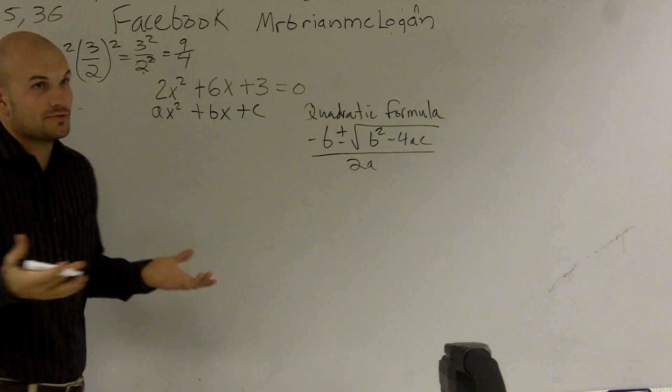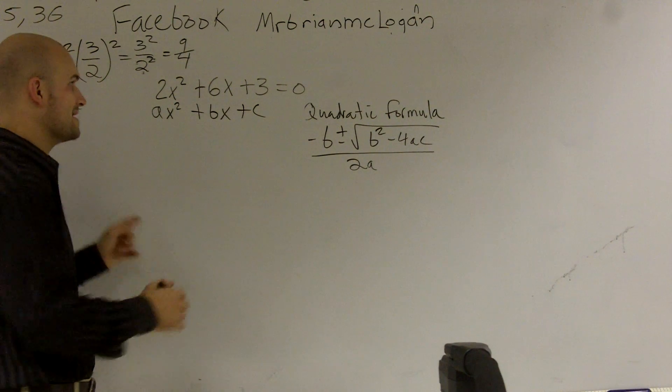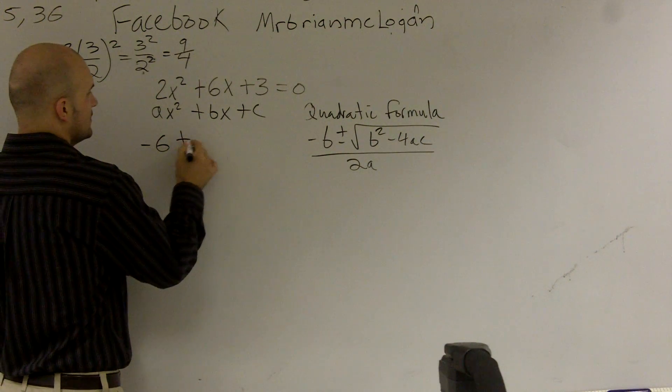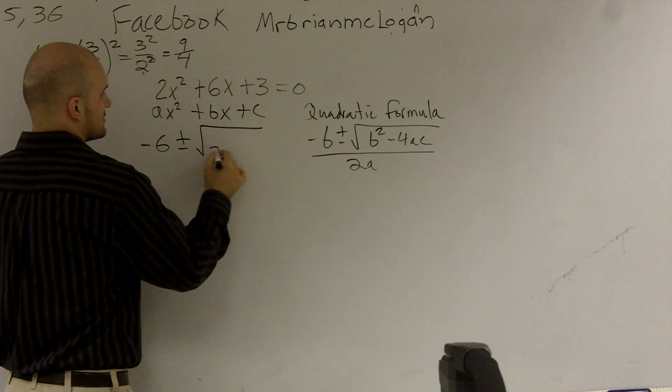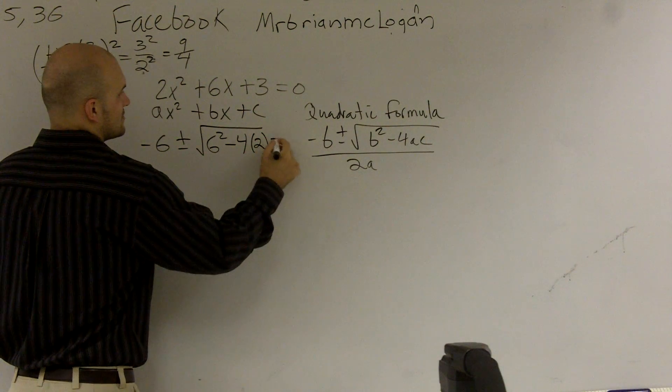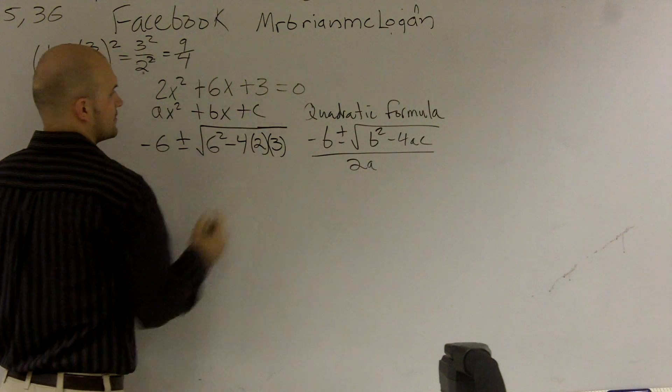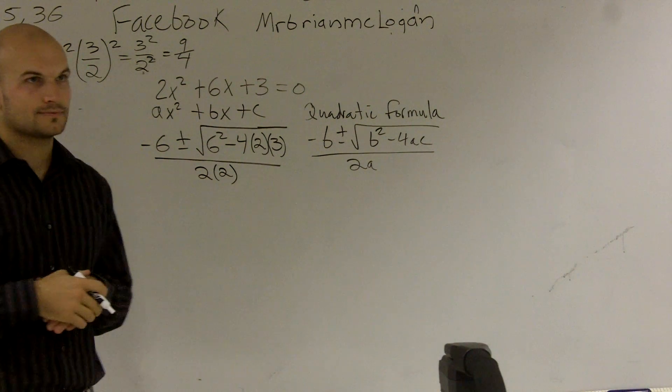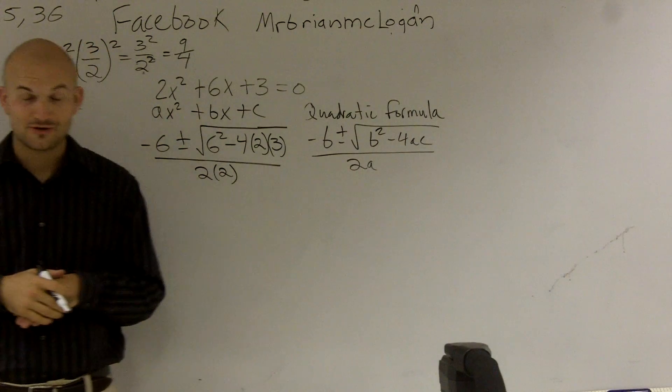So what I'm going to do, all you do is you really just plug them in and then just work with your math skills. So opposite of b is going to be negative 6 plus or minus 6 squared minus 4 times 2 times 3 all over 2 times 2. All right, that was fine.